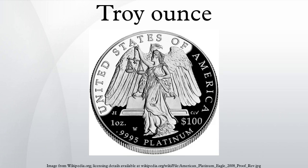The troy ounce is a unit of imperial measure. In the present day it is most commonly used to gauge the mass of precious metals. One troy ounce is currently defined as exactly 0.0311034768 kg, or 31.1034768 g.